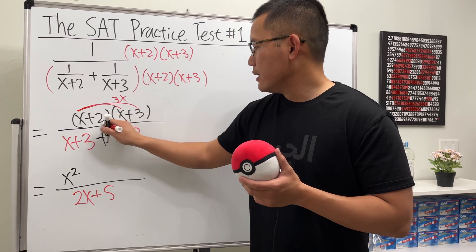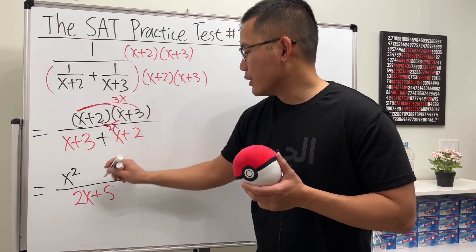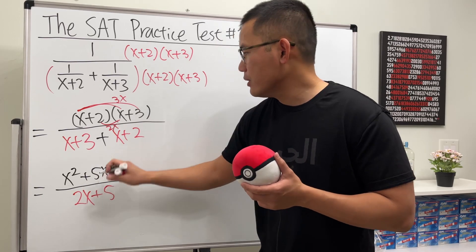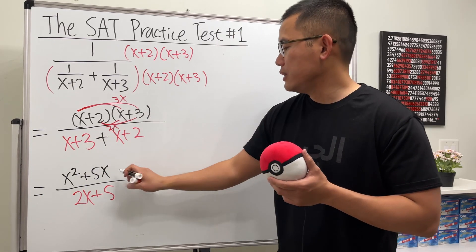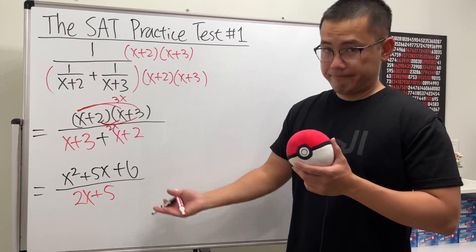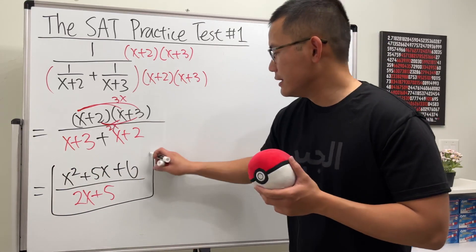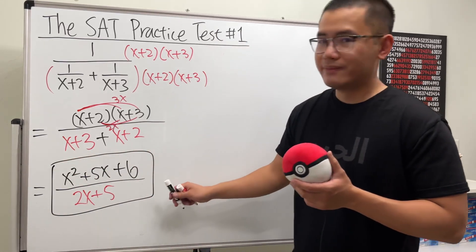Then 2 times x is 2x, so together we get 5x in the middle, and lastly 2 times 3 we get 6. So that's it, this is the answer they are looking for.